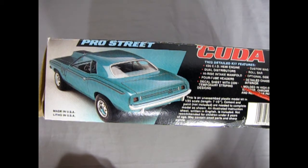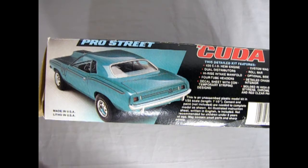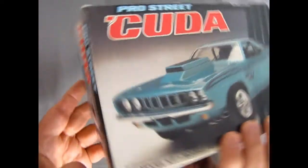Decal sheet with contemporary striping designs, custom mag wheels, roll bar, optional side windows, detailed chassis and interior, molded in high-impact styrene, chrome clear and red clear parts. This is an unassembled plastic model kit in 125th scale. So there you go for the side of the box and of course the side looks like the end.